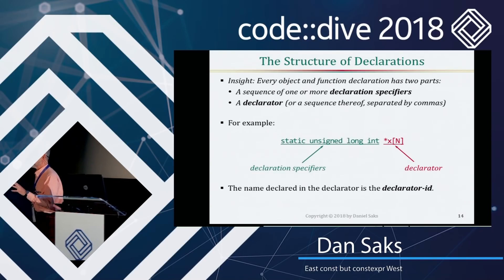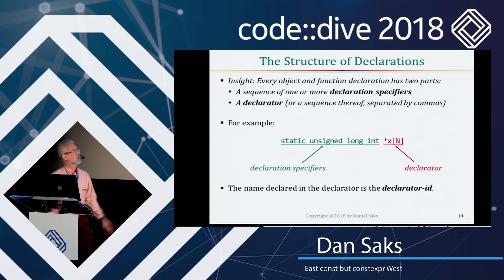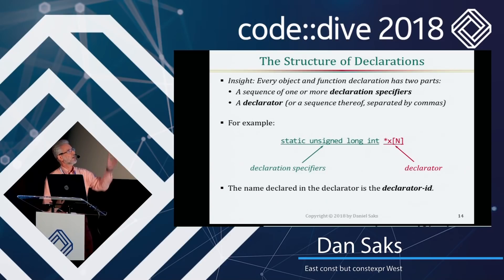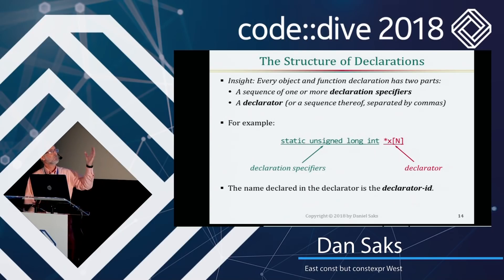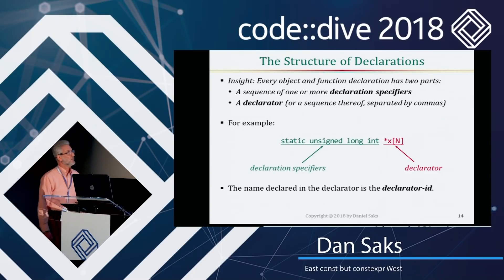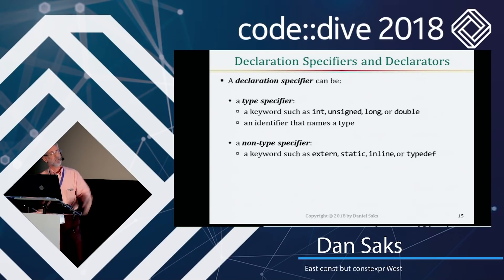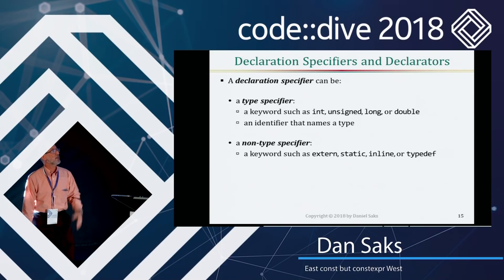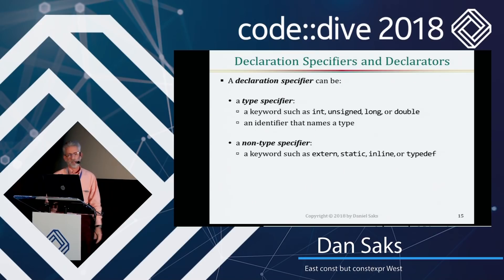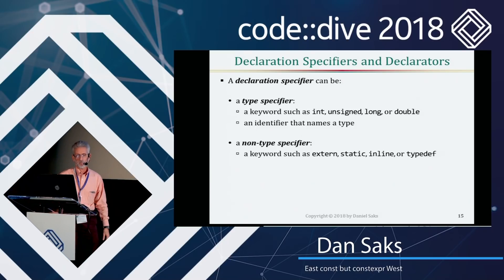All declarations in C and C++ have a basic structure with two parts: something called the declaration specifiers and something called the declarator. The declaration specifiers are typically things like keywords — static, unsigned, long, int. The declarator is that name X, possibly surrounded by operators like stars and square brackets. The name being declared has a special name: it's called the declarator ID. What's significant: some declaration specifiers specify type information — they're called type specifiers, like int, unsigned, long, double. The rest are non-type specifiers: things like extern, static (storage class specifiers), or inline. Those are not type information. The declarator operators behave according to the usual precedence rules used in expressions — it's amazing how few C and C++ programmers know this.